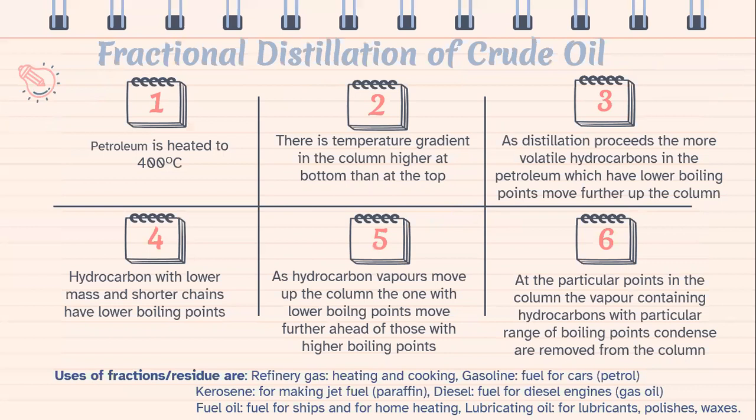Fractional distillation of crude oil involves several processes. Firstly, petroleum is heated to 400°C. Then there is a temperature gradient in the column, higher at the bottom than at the top. As distillation proceeds, the more volatile hydrocarbons in the petroleum, which have lower boiling points, move further up the column. Hydrocarbons with lower mass and shorter chains have lower boiling points. As hydrocarbon vapor moves up the column, those with lower boiling points move further ahead of those with higher boiling points. Finally, at a particular point in the column, the vapor containing hydrocarbons with a particular range of boiling points condenses and is removed from the column.